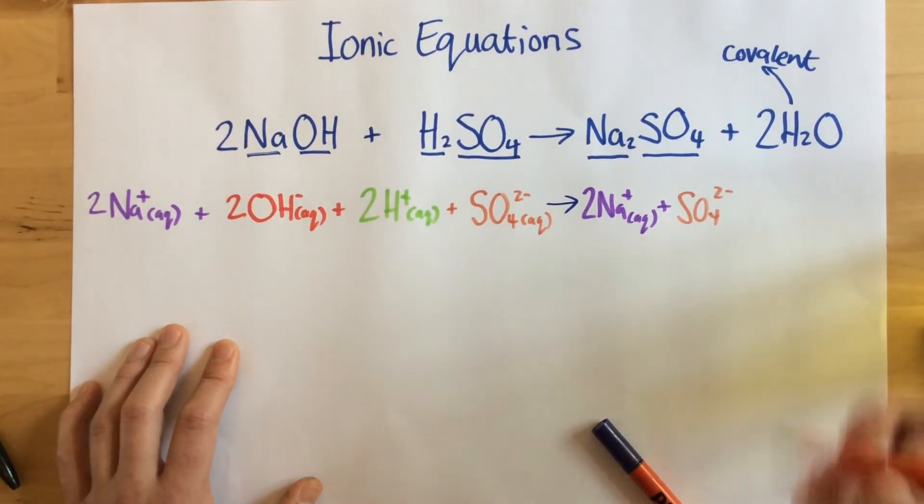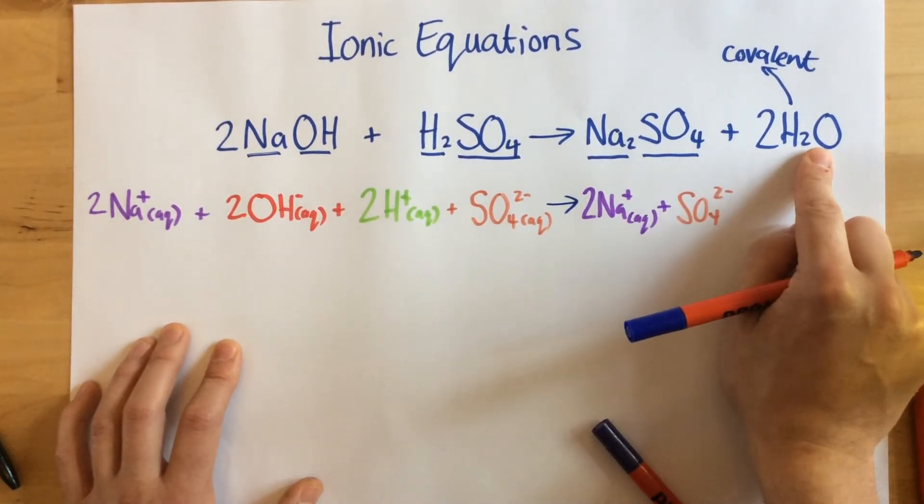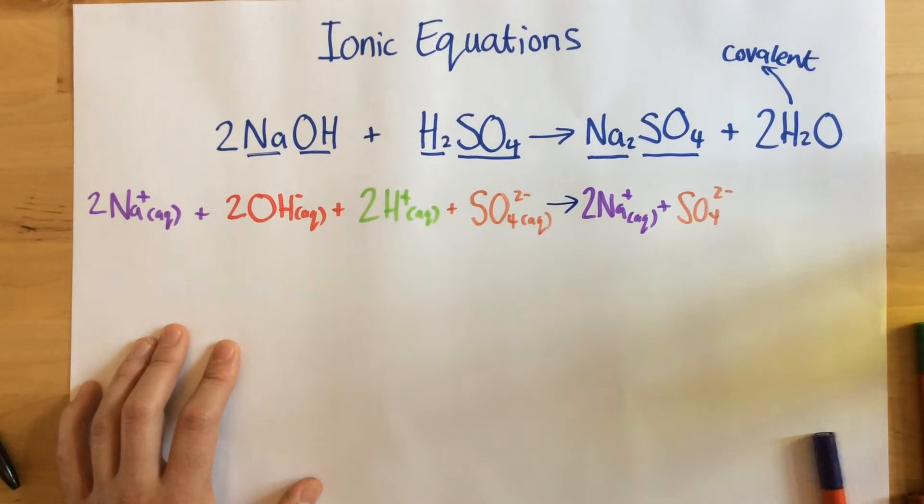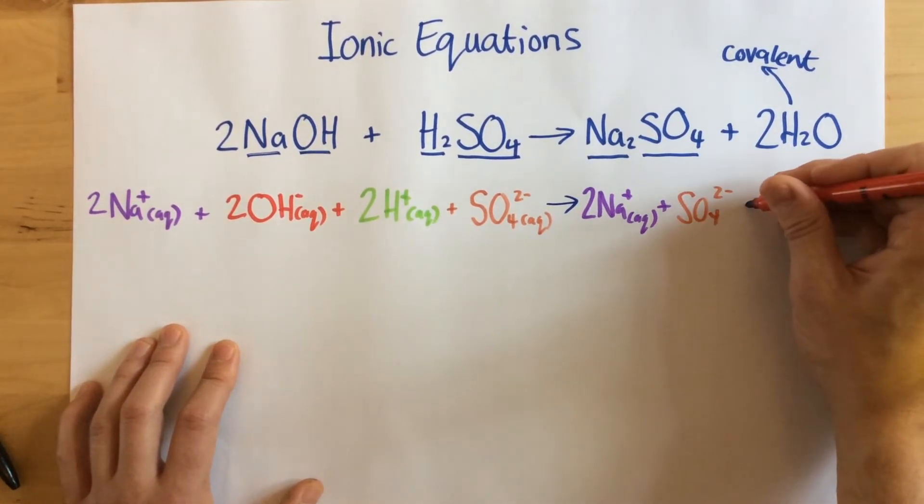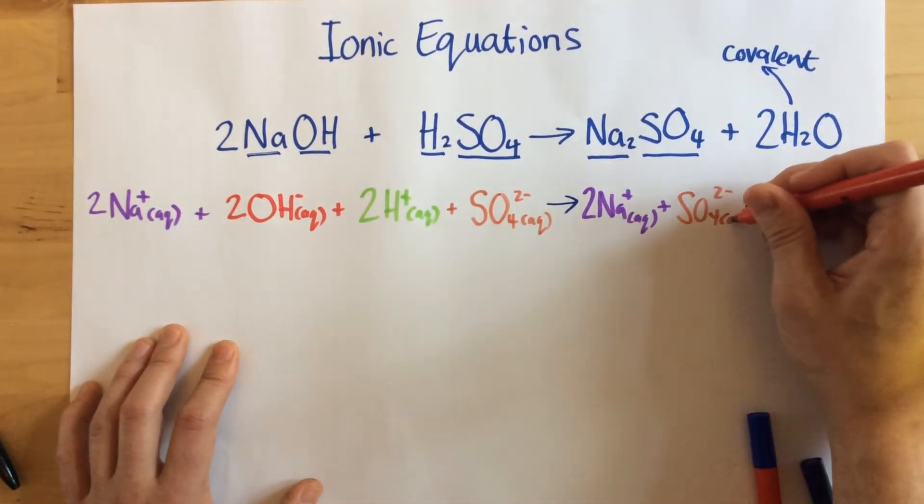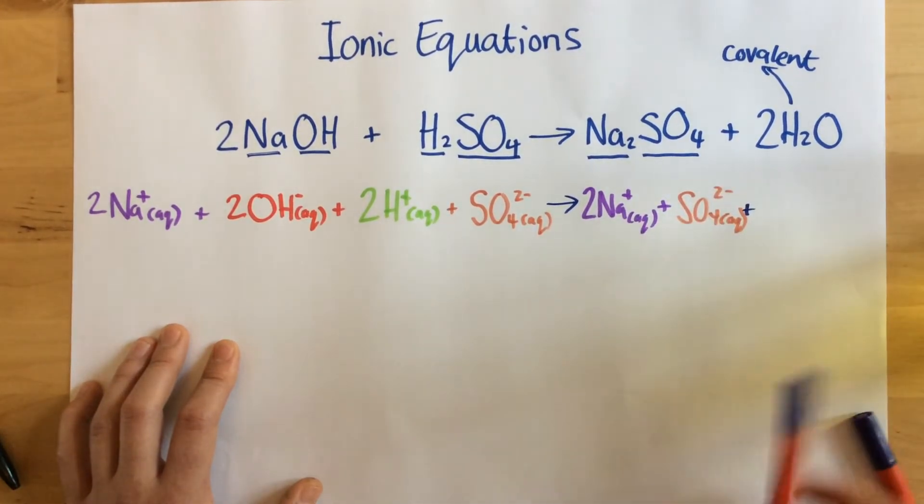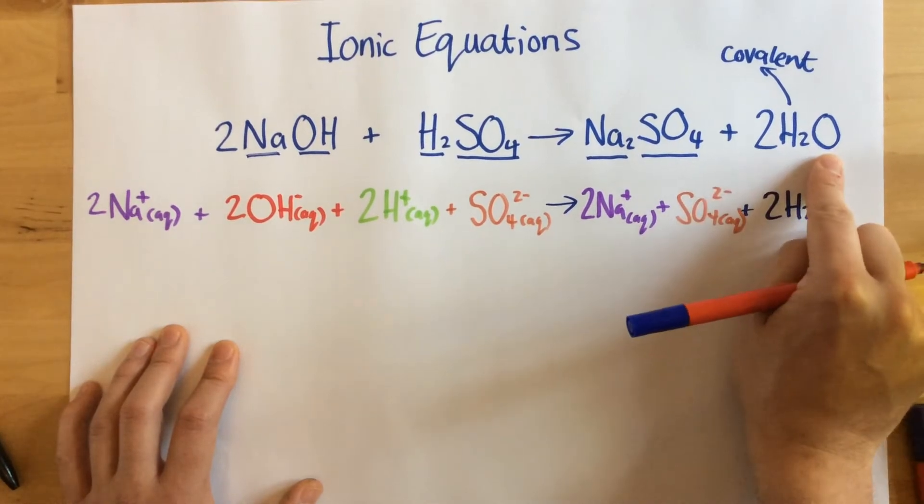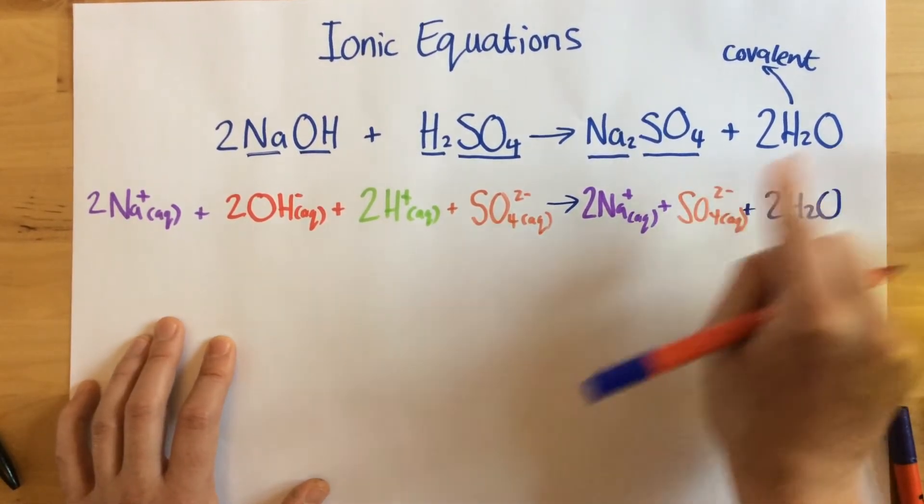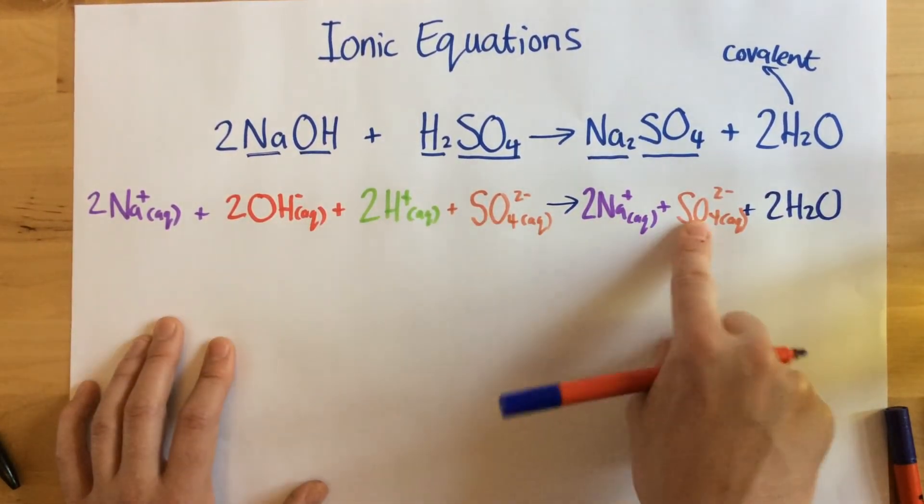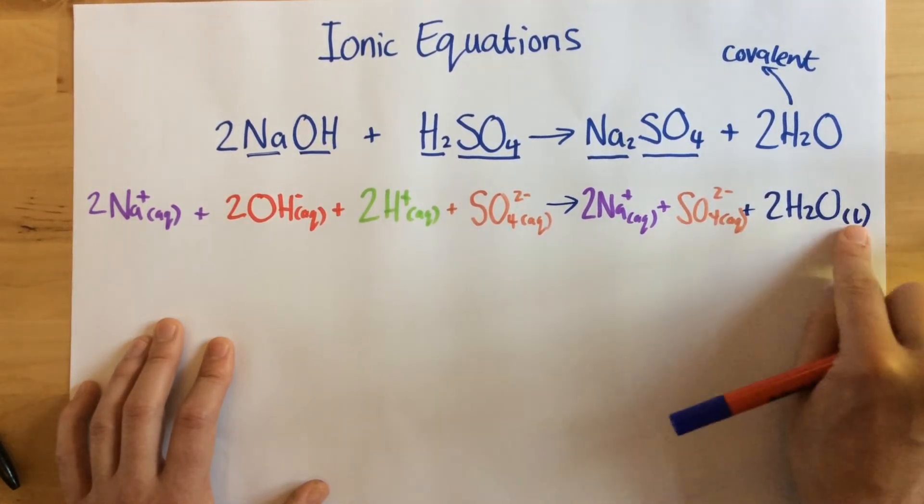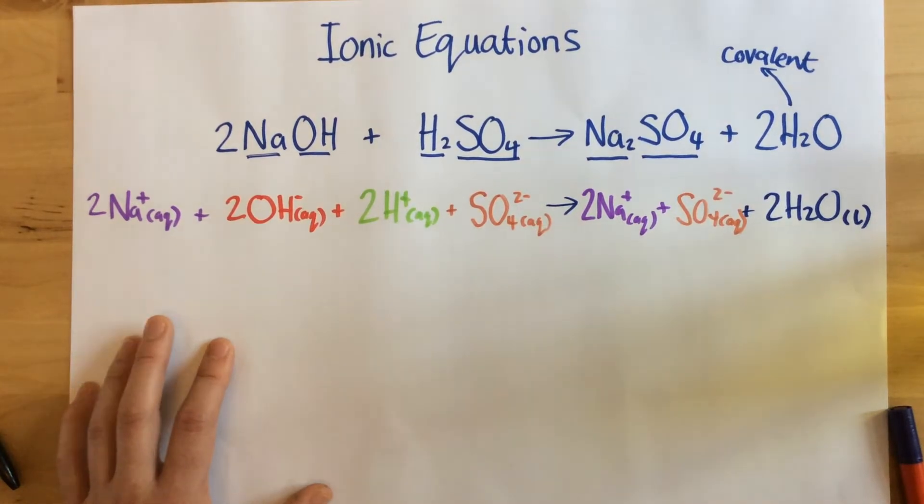Now the final part, because my water is a covalent compound and not ionic, this does not break down into ions in solution. So as a result, oops, I forgot to write my AQ for that one there. As a result, it's just 2H2O still, because this is a covalent molecule, it does not break down into ions in solution like the others. So my state symbol for this one is just L to show that it's a liquid rather than aqueous in solution.